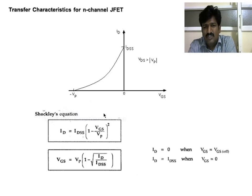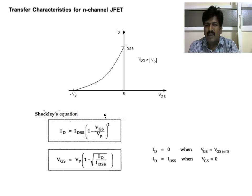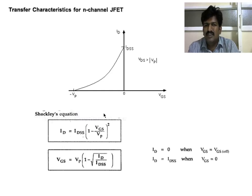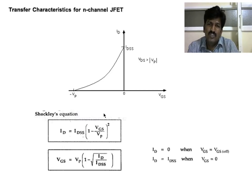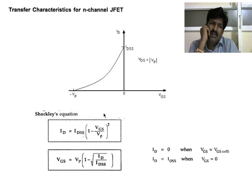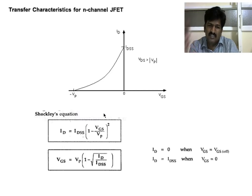These formulas are used to find the amount of current passing from drain to source, the voltage applied drain-to-source, and VP — the pinch-off voltage at which ID equals IDSS. This is today's class. Keep concentration; we will discuss more points regarding the JFET in upcoming classes. Thank you everybody.